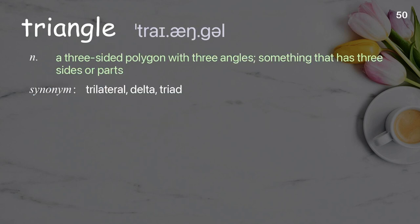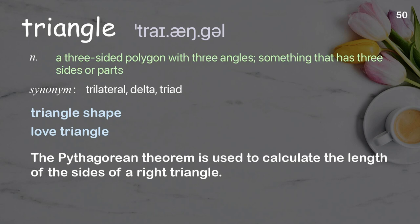Triangle: A three-sided polygon with three angles; something that has three sides or parts. Examples: Triangle shape, love triangle. The Pythagorean theorem is used to calculate the length of the sides of a right triangle.